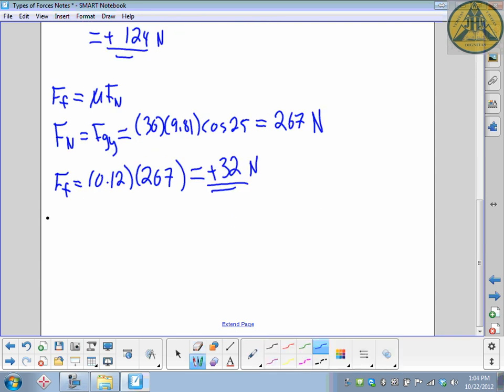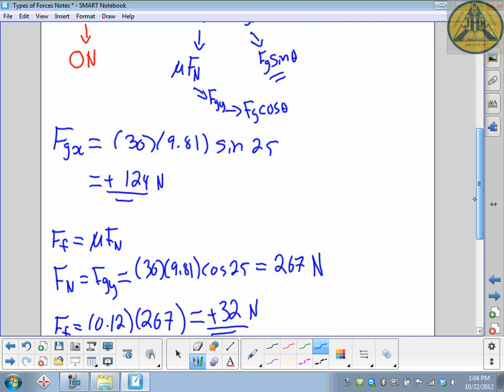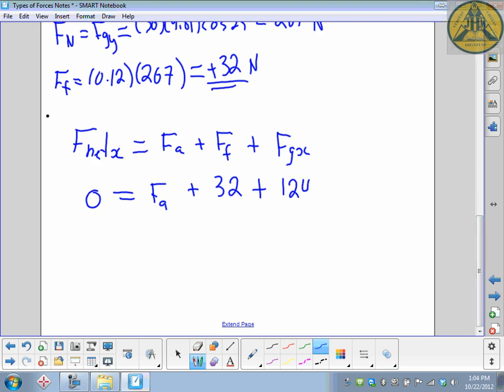I'll write my equation down again. Net force equals applied force plus force of friction plus force of gravity in the x direction. So 0 equals F_a plus 32 plus 124. Careful with your math. Your applied force should be negative 156. You can leave your answer like that. The negative tells me it's up the ramp, which is exactly what we want in the question.